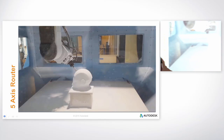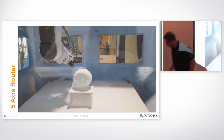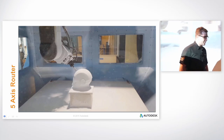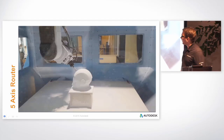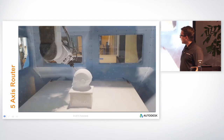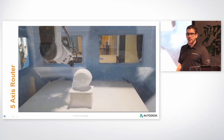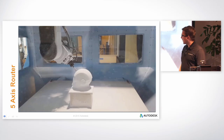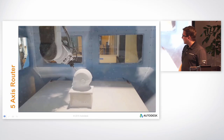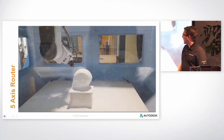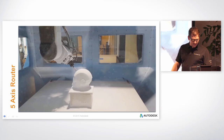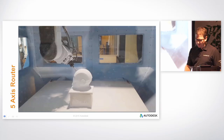This is Iron Man's head that we made at Pier 9. We came up to set up the post-processor for Pier 9 — that's how we communicate with the machine — and thought we had to run something now that it's all set up. Somebody walked by and said 'you should make Iron Man,' so my intern hopped on GrabCAD, downloaded the model, and machined it up. The process of programming it was about an hour.